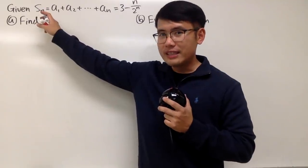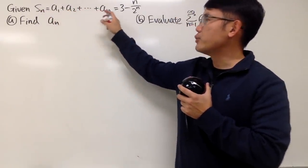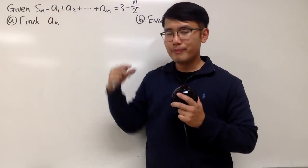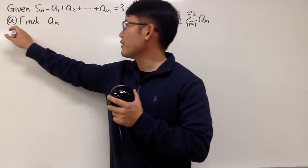$S_n$, of course, is the nth partial sum. It is equal to $a_1 + a_2 + \cdots + a_n$. And $a_n$ is right here. As long as we get rid of this part, then we can get the $a_n$ by itself, right? So now, let me write this down right here for you guys.